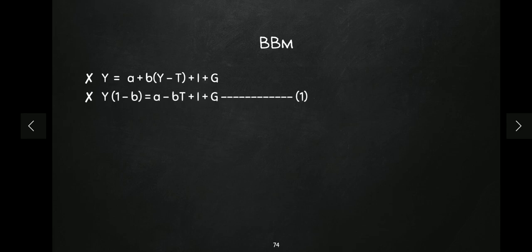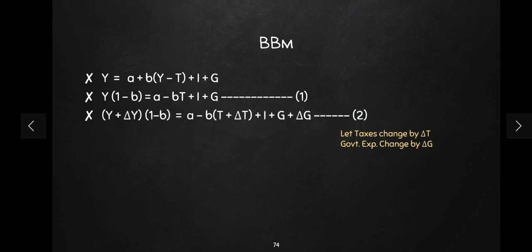Now I've modified this equation — Y terms are brought to the left-hand side and all other terms to the right-hand side. We will mark this as equation one. Now let's say government taxes have increased by delta T and government expenditure has increased by delta G. Since this is a balanced budget multiplier, both things change — government expenditure as well as tax. So incorporating this into the equation, national income also changes to Y + delta Y, taxes become T + delta T, and government expenditure becomes G + delta G. We will mark this as equation two.